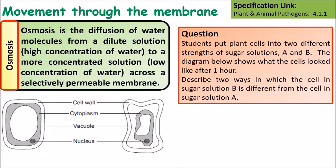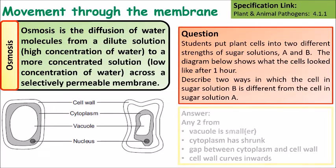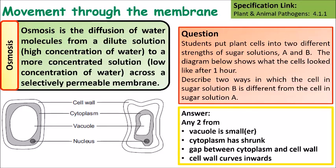A question you could be asked: students put plant cells into two different strengths of sugar solutions, A and B. The diagram shows what the cells look like after one hour. Describe two ways in which the cell in solution B is different from the cell in solution A. Pause the video, have a think about it, then look at the answer. You could have any two from: the vacuole is smaller, the cytoplasm is shrunk, there is a gap between the cytoplasm and the cell wall, and the cell walls are curving in.